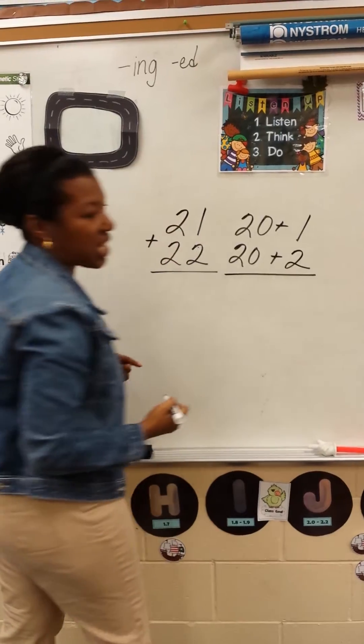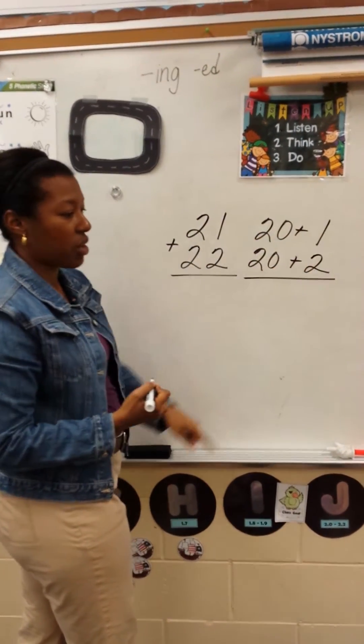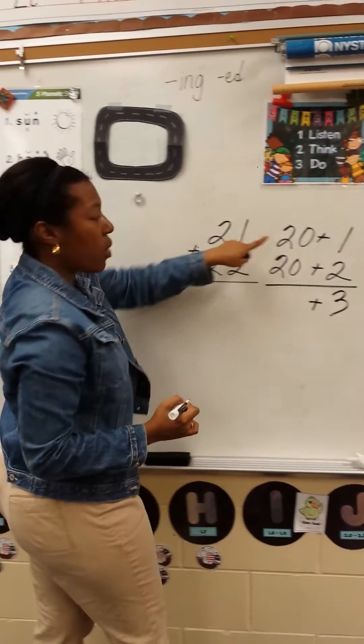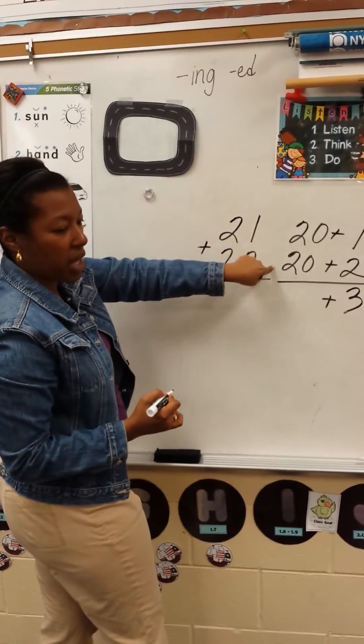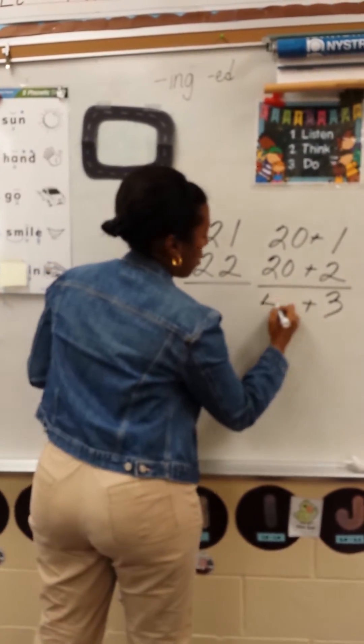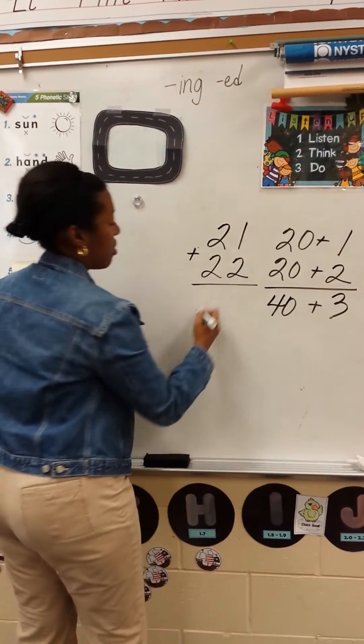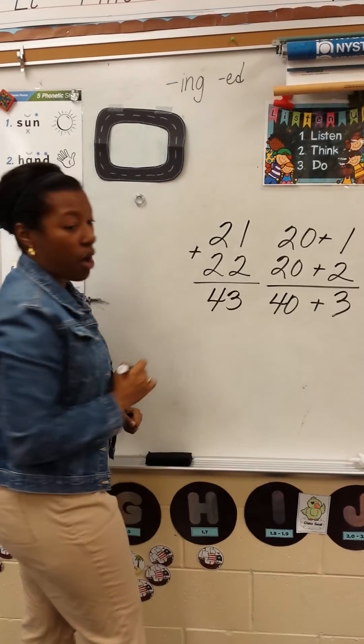Okay, I'm going to ask somebody to raise their hand and give me an answer. What is 1 plus 2? Holden? 3! I'm going to ask somebody a question. What is 20 plus 20, Seth? 40! Now I'm going to ask everyone, what is 40 plus 3? 43! That is without regrouping.